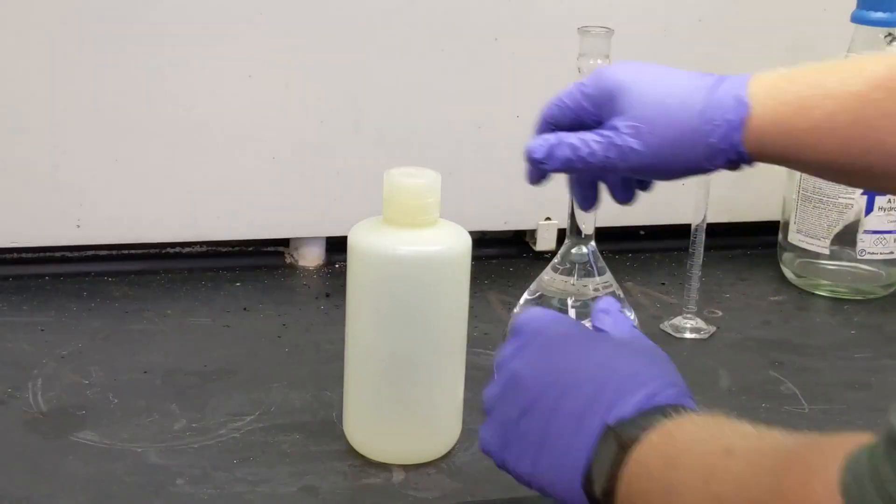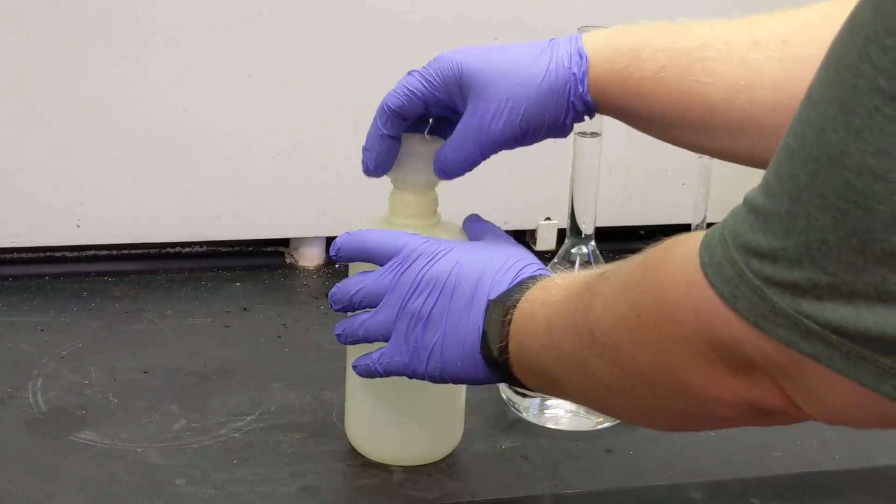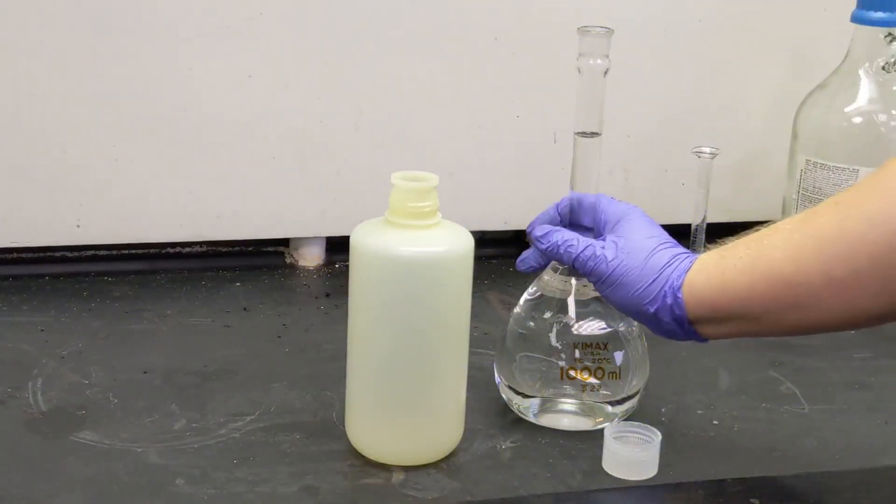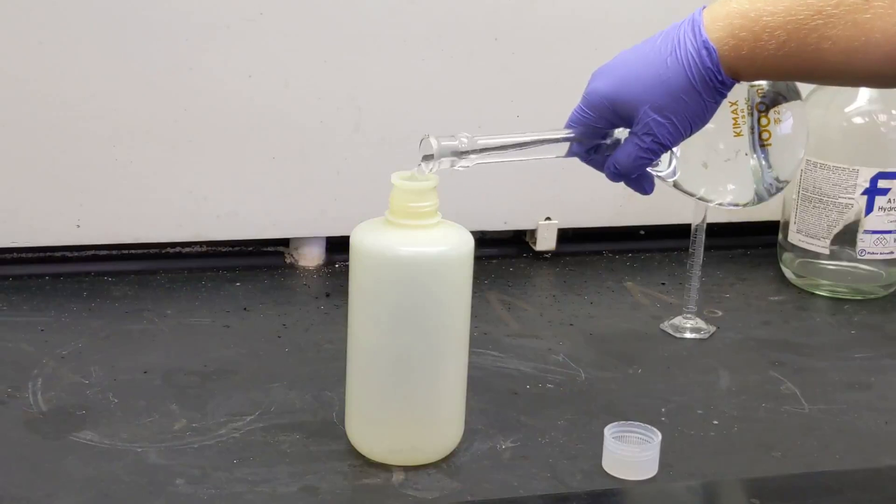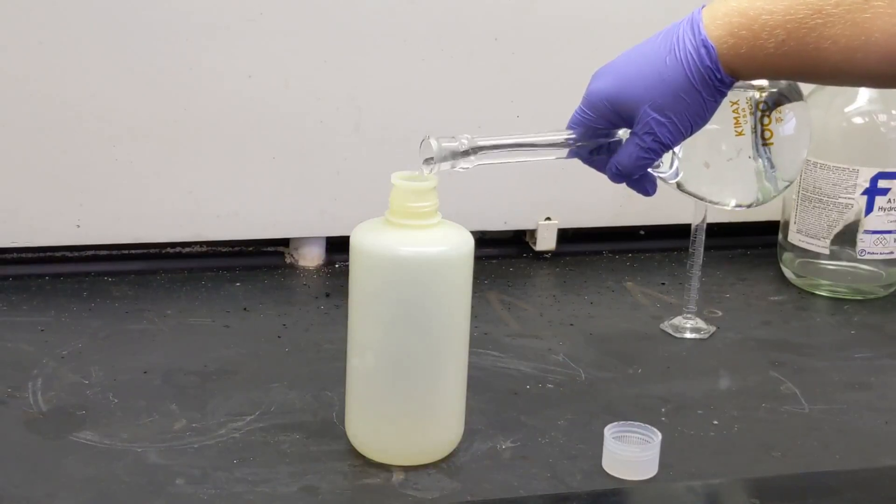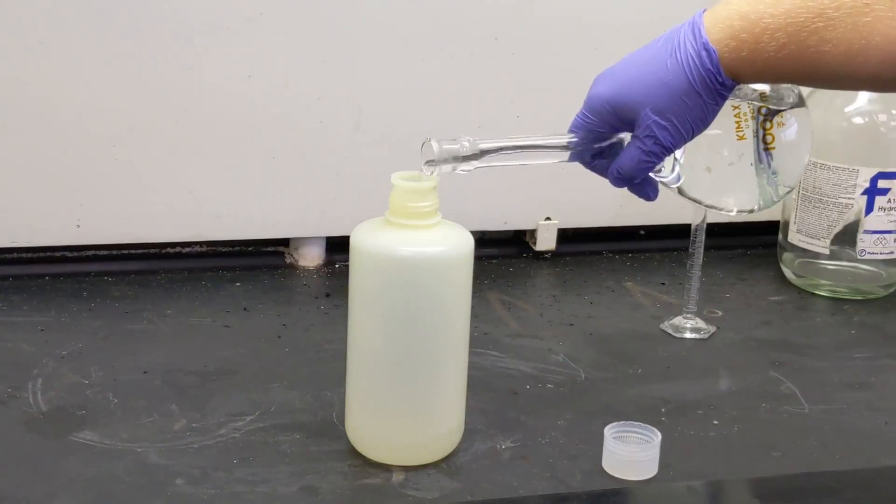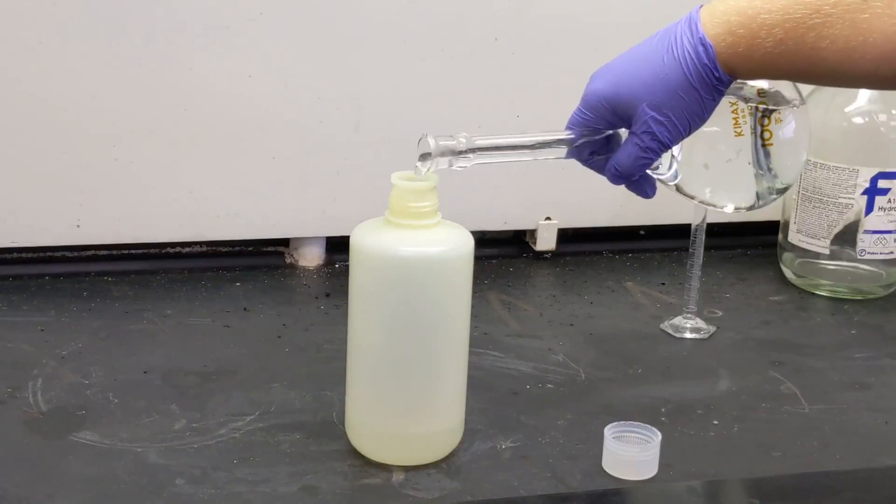The last item on our checklist is to add the diluted acid into its Nalgene bottle. Uncap the bottle and pour it in slowly at first—we want to avoid spills at all costs.